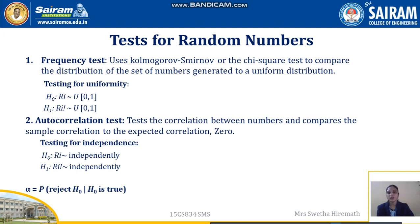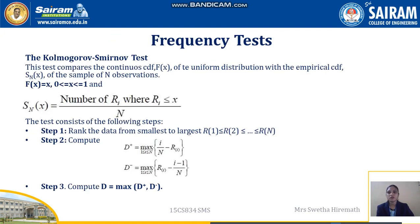Next we explain the Kolmogorov-Smirnov test. This test compares the continuous CDF, F(x), of the uniform distribution with the empirical CDF, S_N(x), of the sample of N observations. We collect the sample of N observations and compare them with the continuous CDF F(x).